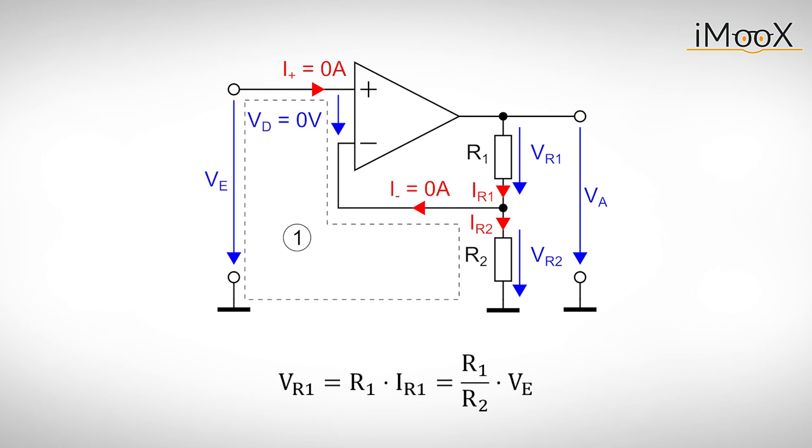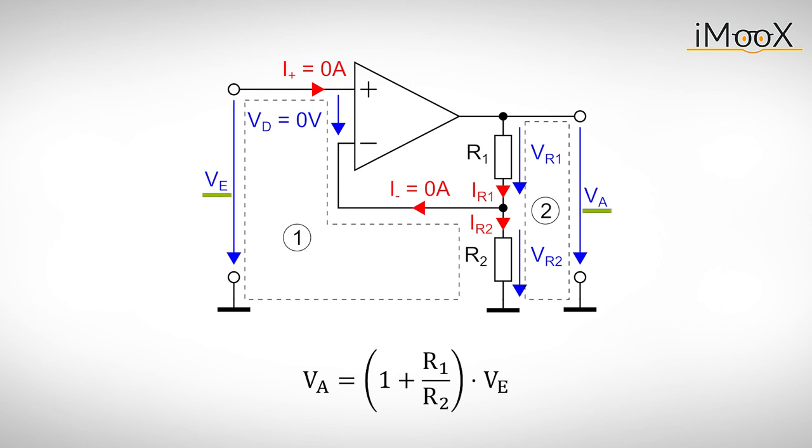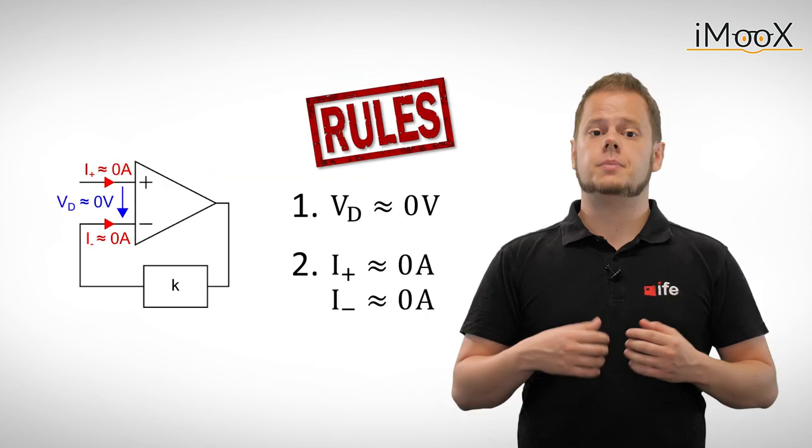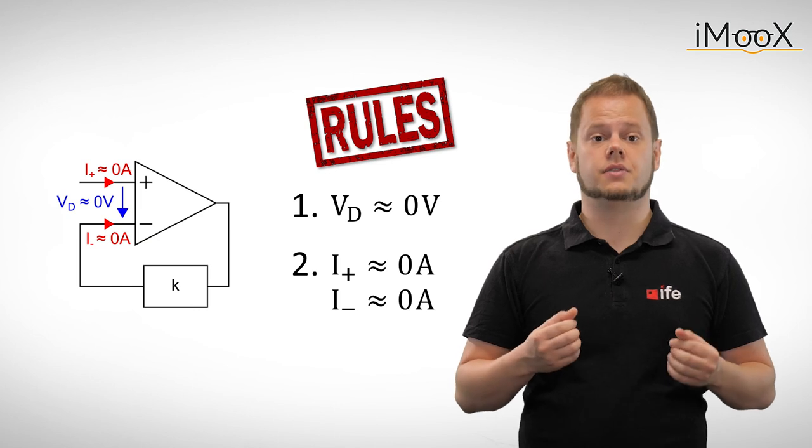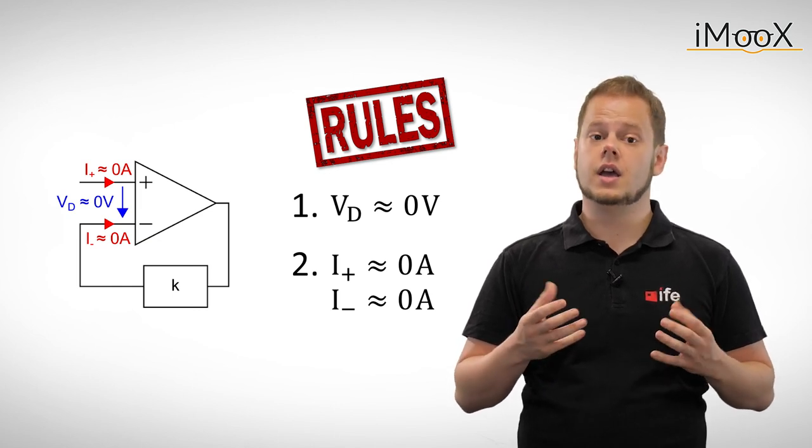We obtain the voltage drop on R1 via Ohm's law. Finally, by applying loop 2, the output voltage VA is given as the sum of VR1 and VR2. Substituting VR1 and VR2 results in the output voltage to input voltage relation we were looking for. This means the amplifier has a gain G equals 1 plus R1 over R2. By applying the two rules, any circuit involving an operational amplifier with negative feedback can be solved easily.